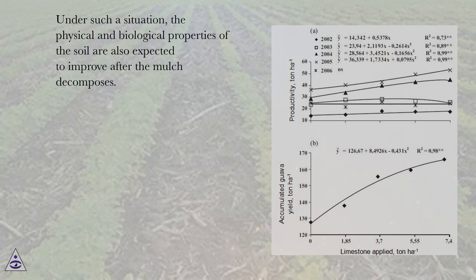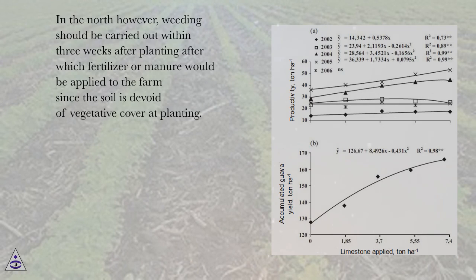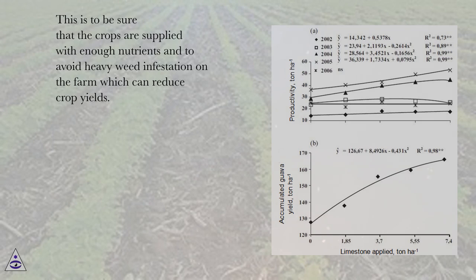Under such a situation, the physical and biological properties of the soil are also expected to improve after the mulch decomposes. In the north however, weeding should be carried out within three weeks after planting, after which fertilizer or manure would be applied to the farm since the soil is devoid of vegetative cover at planting. This ensures crops are supplied with enough nutrients and avoids heavy weed infestation which can reduce crop yields.